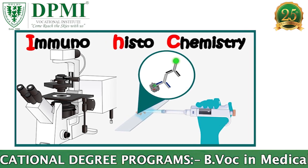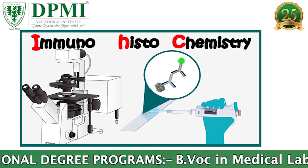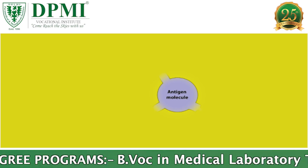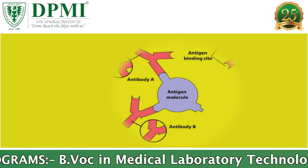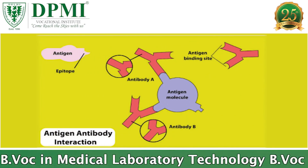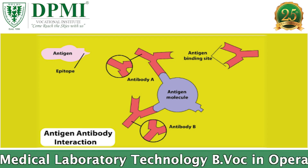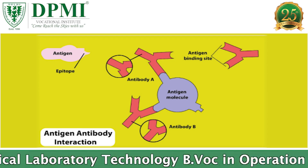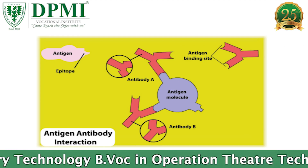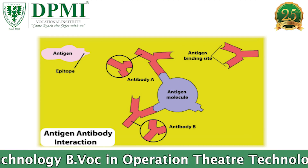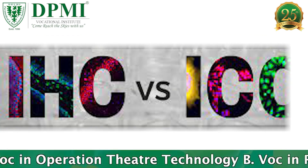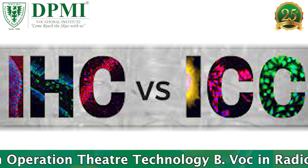Immunohistochemistry is a technique that uses antibodies conjugated to enzymes that catalyze reactions to form detectable compounds, to visualize and localize specific antigens in a tissue specimen. The root 'histo' specifically applies to biological tissue.